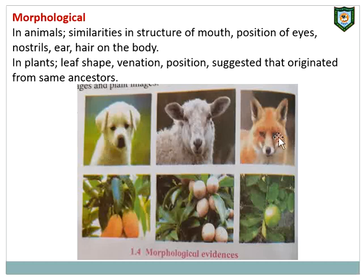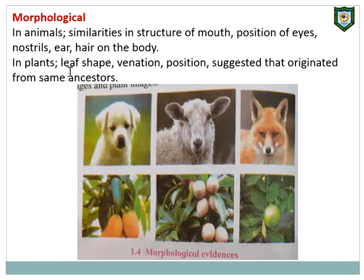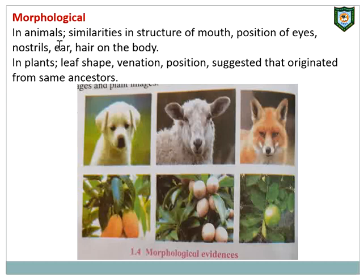The first is morphological evidence. You can see the picture showing a similarity of structure of mouth in animals — this particular dog, this particular sheep, and this wolf. Three different animals, but there is similarity: structure of mouth, position of eyes, nostrils, ears, and hair on the body. These are called morphological evidences. Whether it is a dog, a sheep, or a wolf, they will have similar characters.